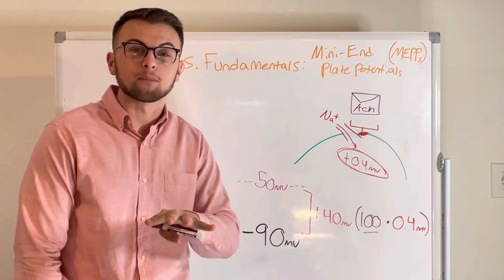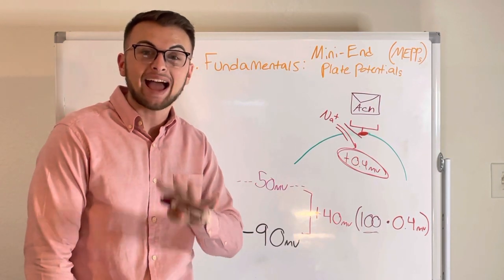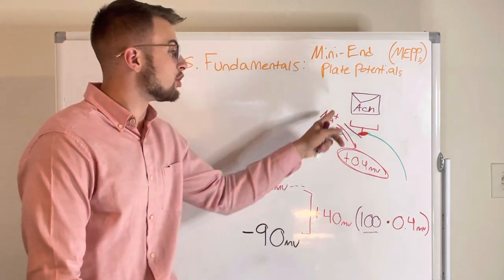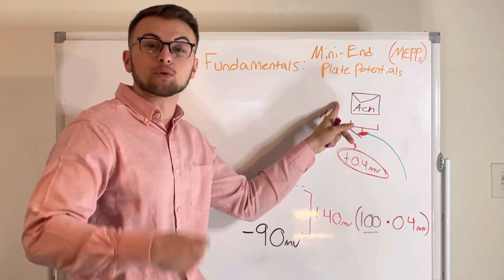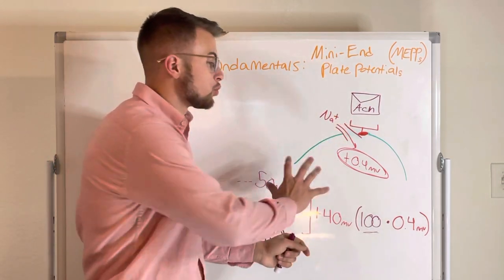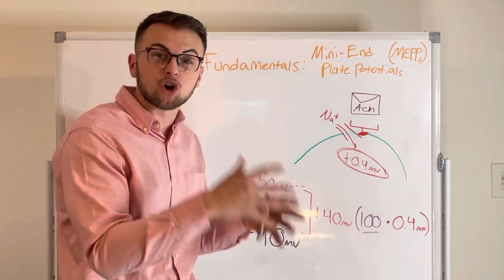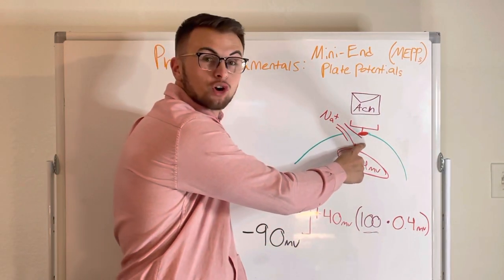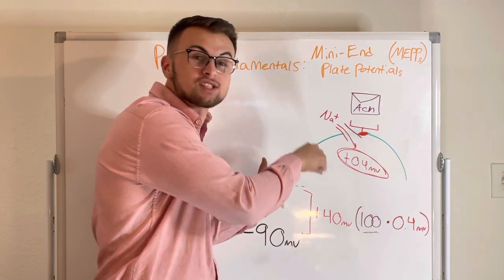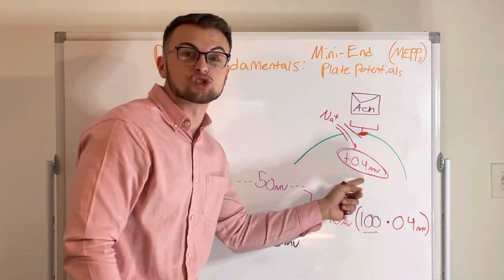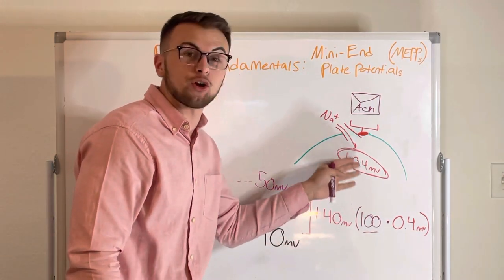We must remember that each time an action potential occurs, a neurotransmitter will be released to bind to our post-synaptic cell. Once that binding occurs, the receptor will allow ions into the cell which will change the millivoltage of that area of the cell.